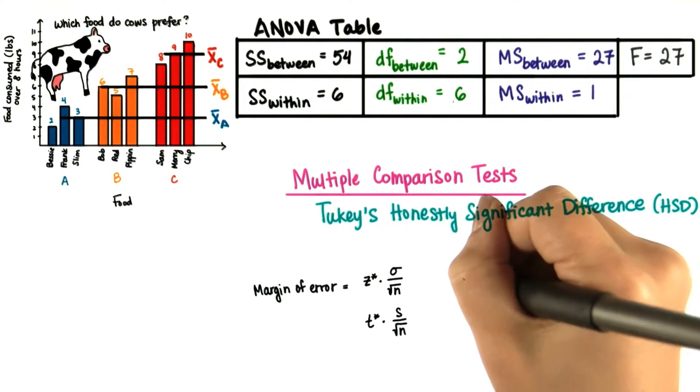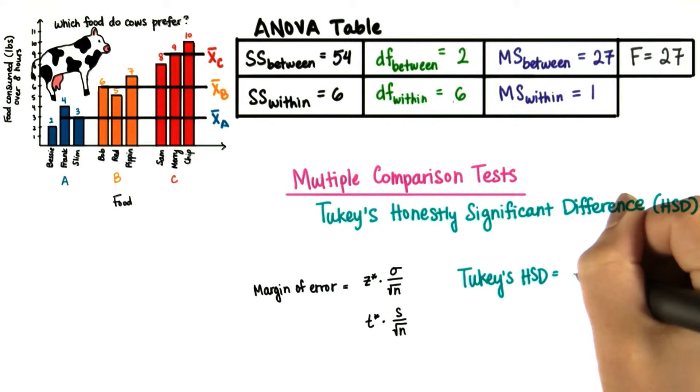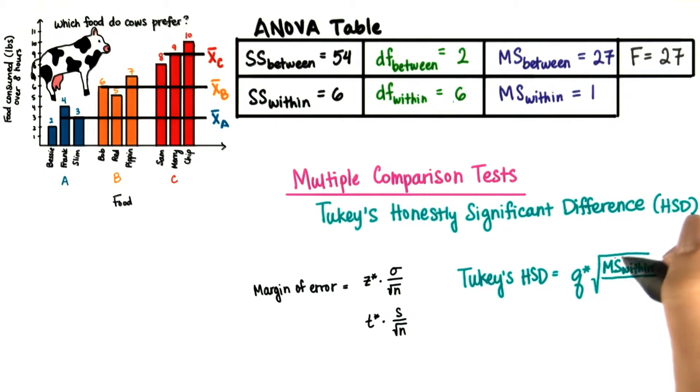But now when we're comparing three or more samples, we have a new statistic called Q, and we multiply this by the square root of the mean square for within subject variability divided by n.